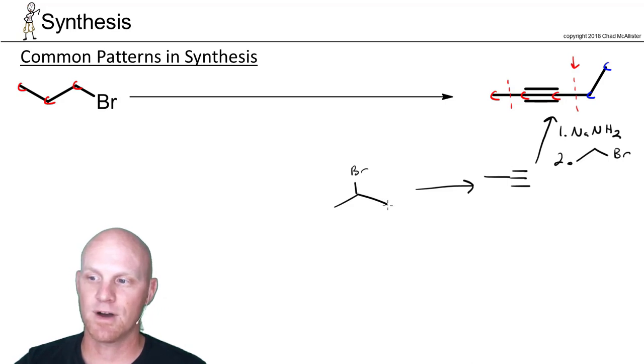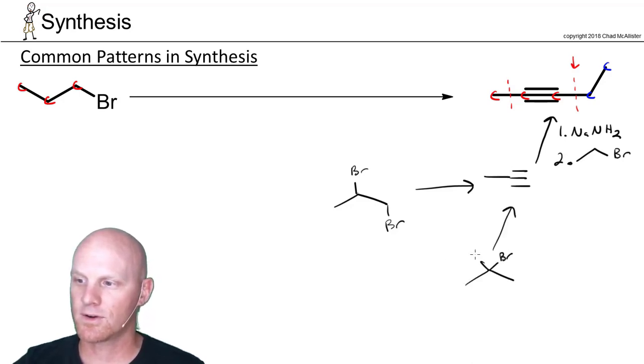We saw in our common pattern that just came up that I can have them on adjacent carbons, and I know how to pull that off, but technically we could have had these two leaving groups on either carbon of the alkyne. So we really got three options here for how to form this.